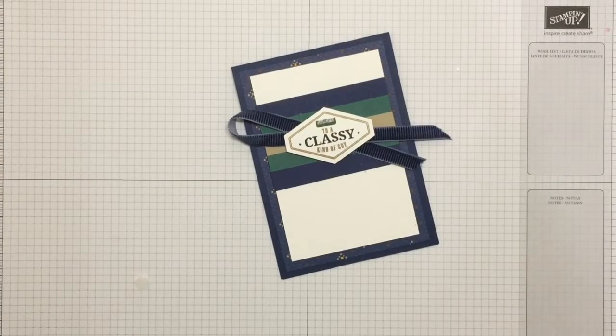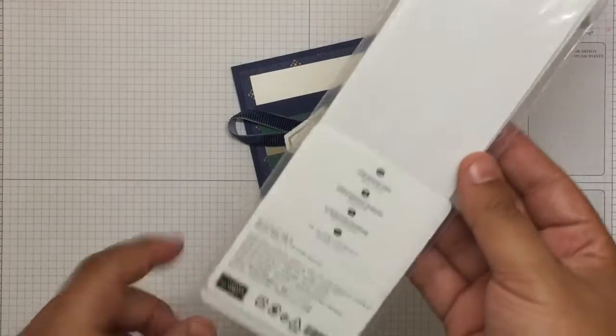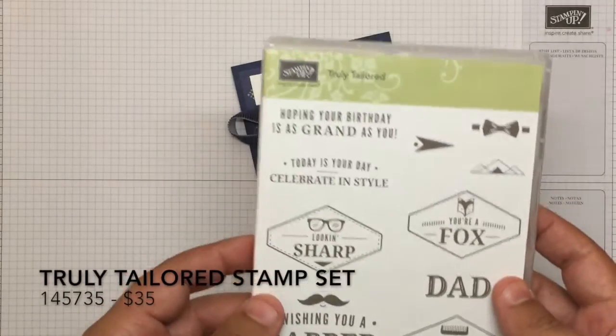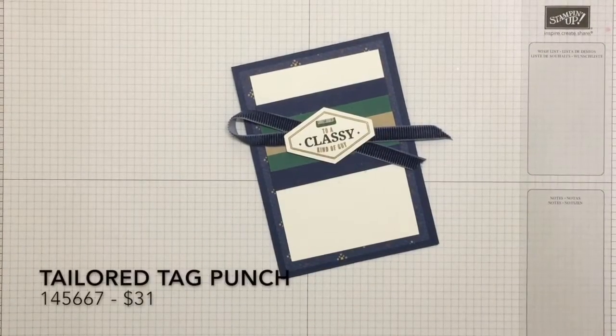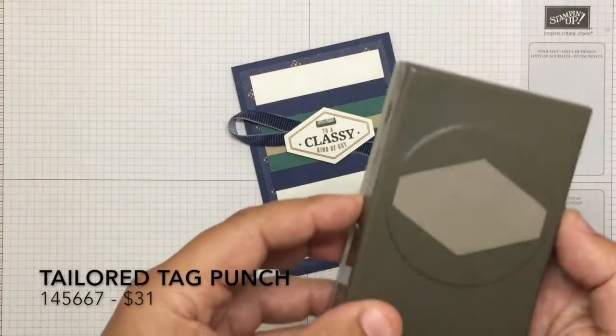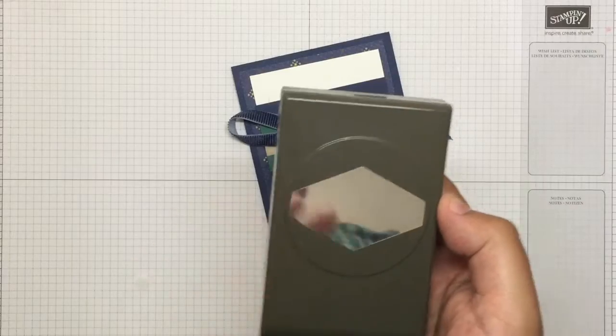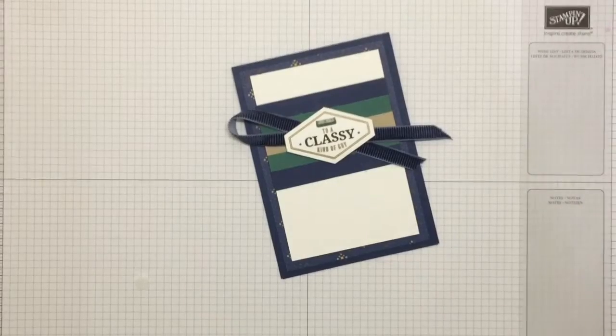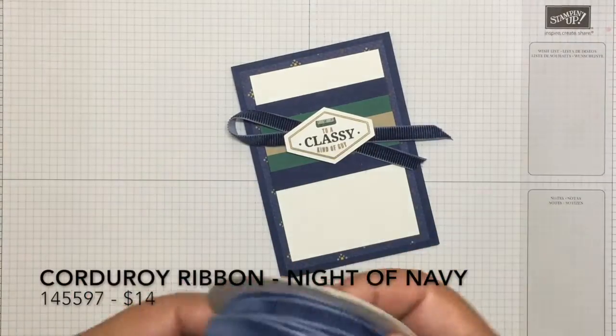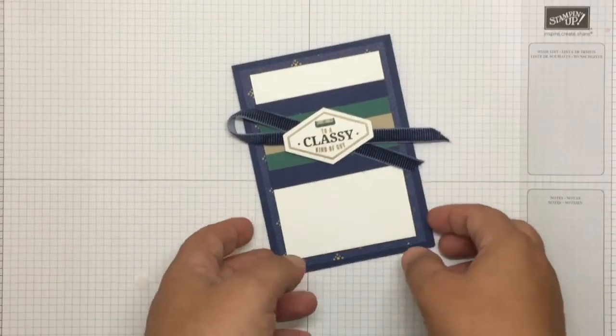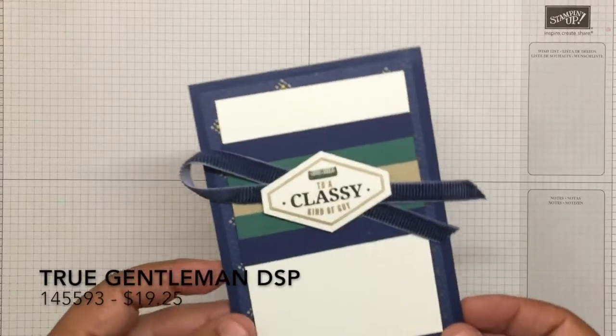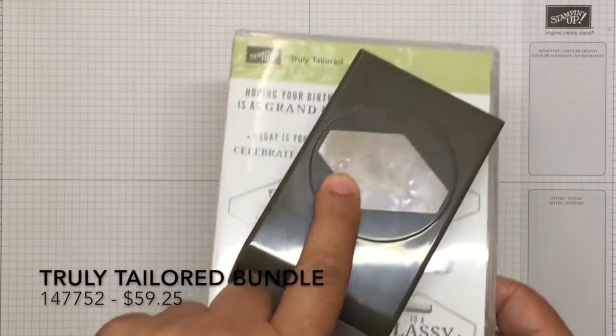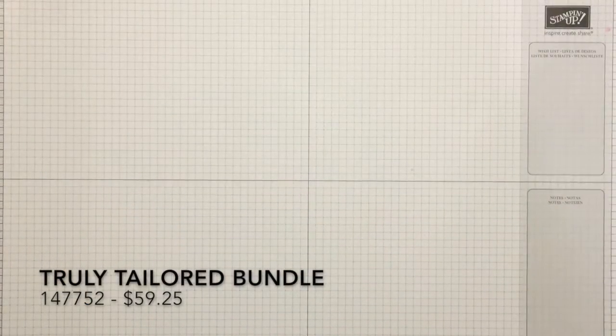So just a reminder on some of the products that we've used. I just used the foam adhesive strips, which are awesome if you don't already have them. I used the truly tailored stamp set. I used the tailored tag punch. So that's pretty awesome. A coordinating die with that. I used the corduroy ribbon, which is pretty cool. And I used the true gentleman designer series paper just on the back there. Now, what's pretty cool is that these two come together as a bundle. So you can save some money on that.